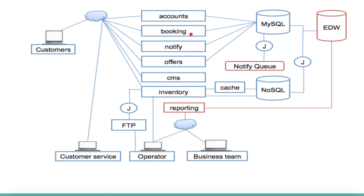Another key component is the booking module, which plays a key role. After you find a ticket, you book it by providing certain information, and that gets fed into the MySQL database. Then there is the notification piece, which plays a major role — as soon as you book a ticket, you get an SMS notification saying your ticket is booked. That's why we have the notification APIs.